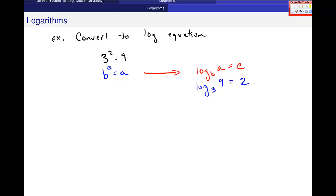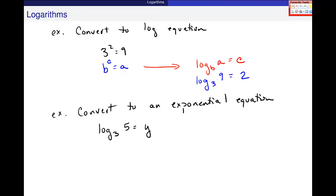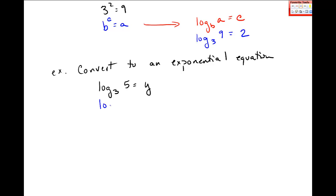Let's switch back the other direction, convert to an exponential equation. Let's do log base 3 of 5 is equal to y. Going here, I have this log, usually I'm using base b of a equals c. I go to this exponential where b is the base, c is here in the exponent, and a is out here.